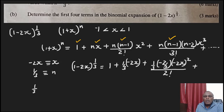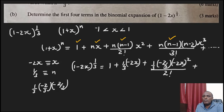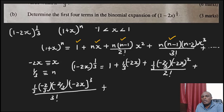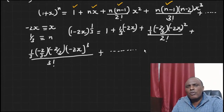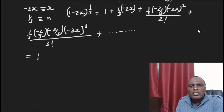The fourth term is n, which is 1 over 3, multiplied by (n minus 1), which is negative 2 over 3, multiplied by (n minus 2), which is 1 over 3 minus 2 giving negative 5 over 3, multiplied by (negative 2x) cubed, over 3 factorial. We are required to go up to the fourth term.